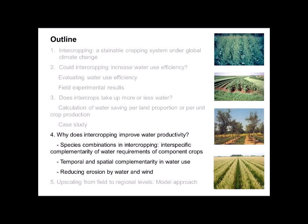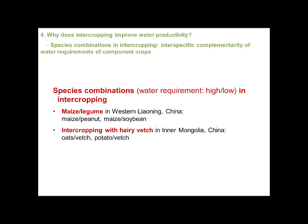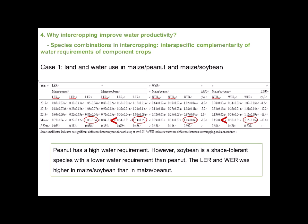Why can intercropping improve water productivity? The first reason is the interspecific complementarity of water requirements of component crops. Mixing a species with high water requirement and a species with lower requirement may give water use advantages and reduce the risk of yield reduction due to drought during the grain filling stage. Taking maize-peanut and maize-soybean intercropping as an example: maize is a high water requirement crop, while soybean has a lower water requirement than peanut, so the land and water equivalent ratio was higher in maize-soybean than in maize-peanut.